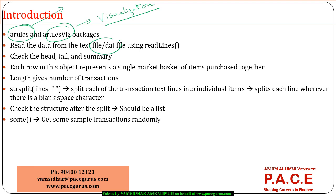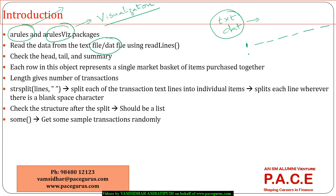The data file should be in a text file or a dat file, with data in comma-separated or space-separated format. For customer one, whatever purchases were made when visiting the store will all be space-separated. Customer two, again, lists all purchases made. This is how we have a list of all the transactions in a text file.